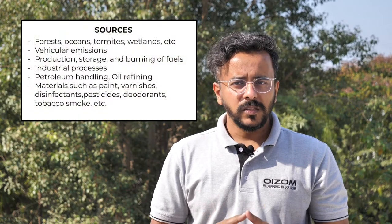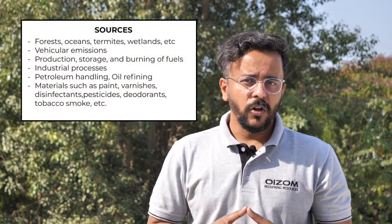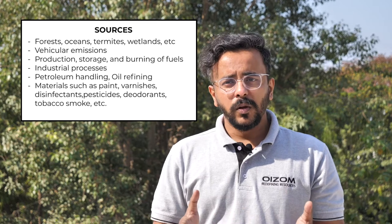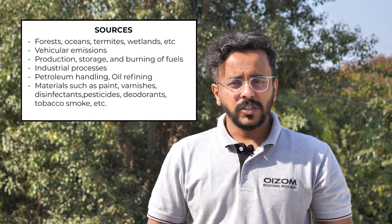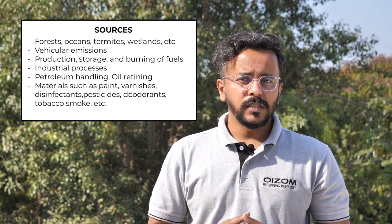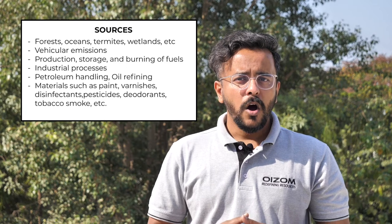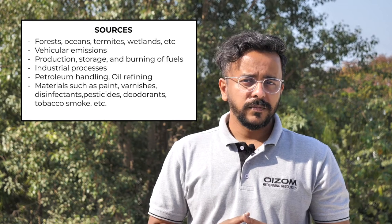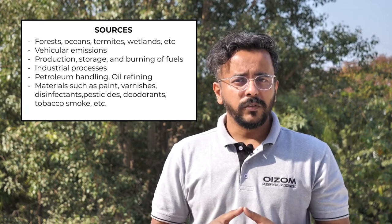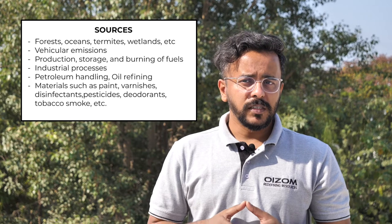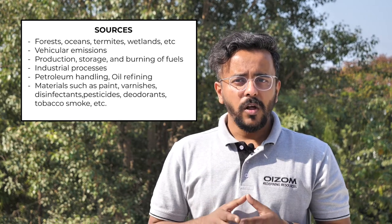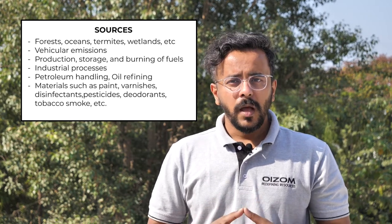oceans, termites, wetlands and volcanoes. Anthropogenic sources include vehicular emissions, production storage and burning of fossil fuels such as gasoline, wood, coal or natural gas, industrial processes in the chemical, petrochemical, automotive and pharmaceutical sectors, petroleum handling, oil refining, and biodecomposition.